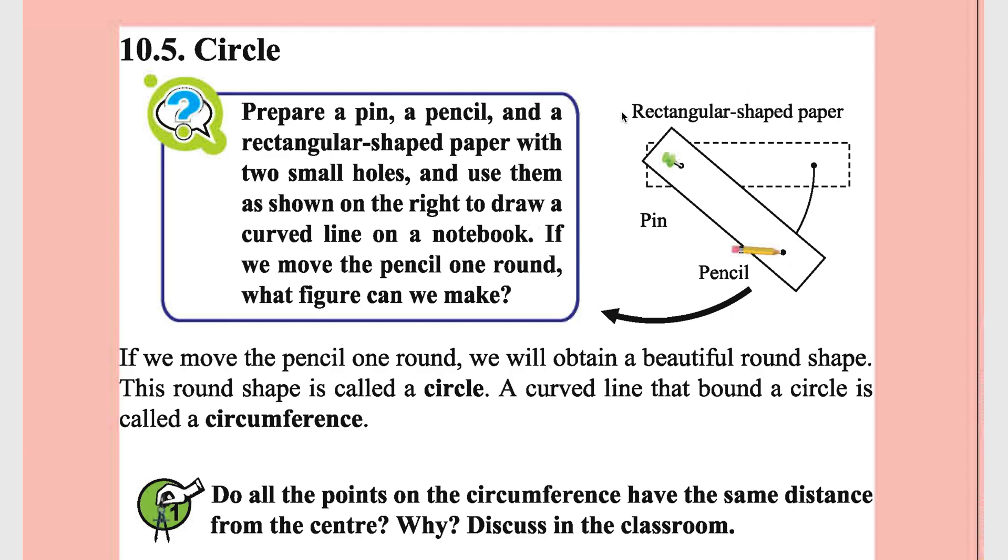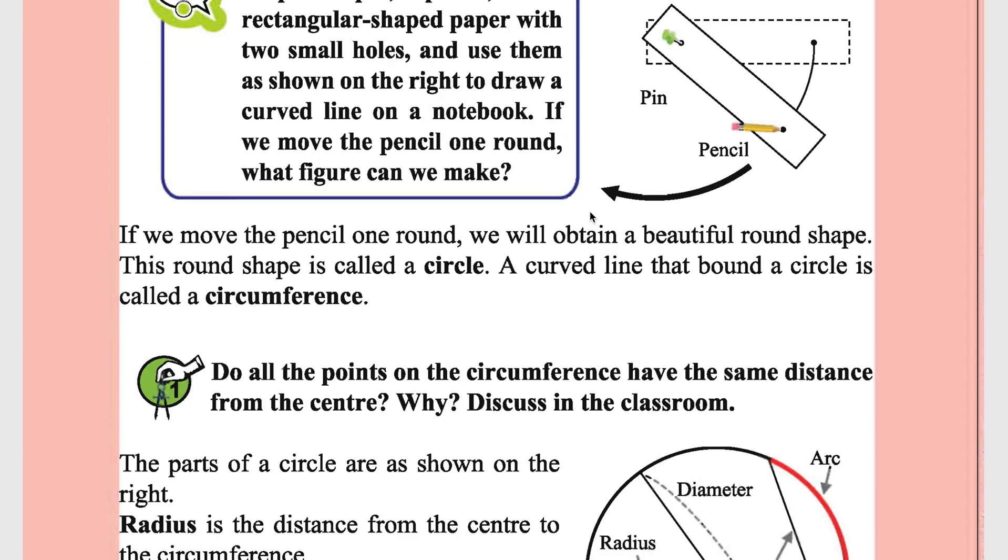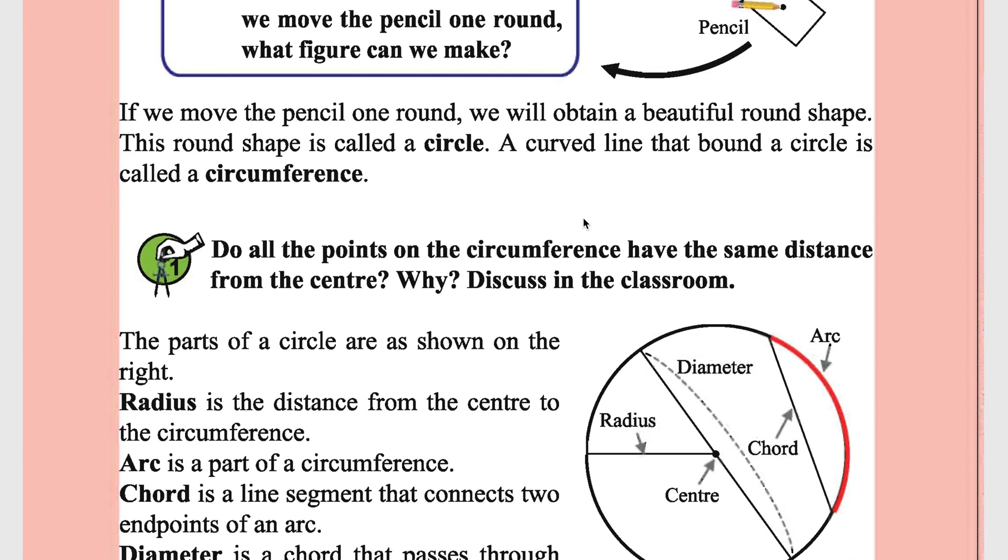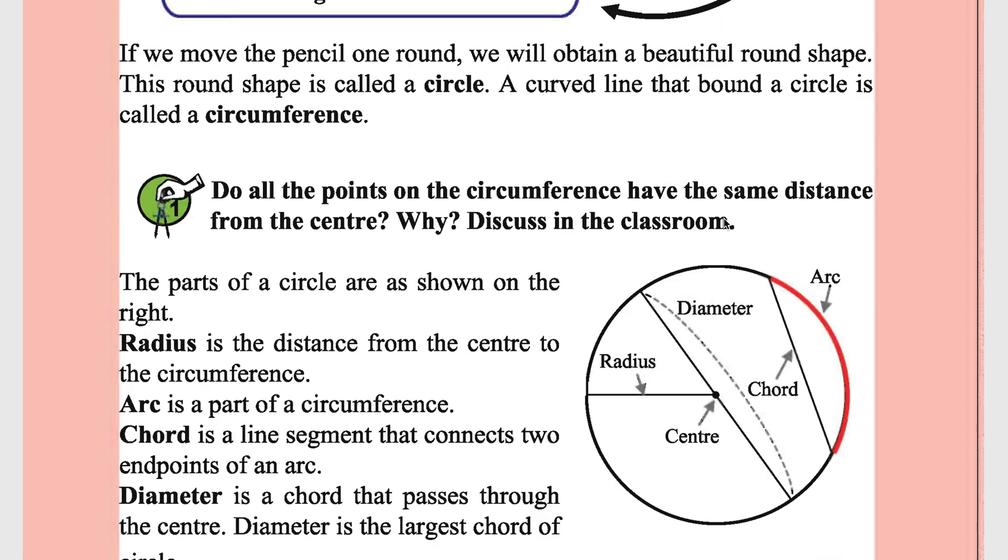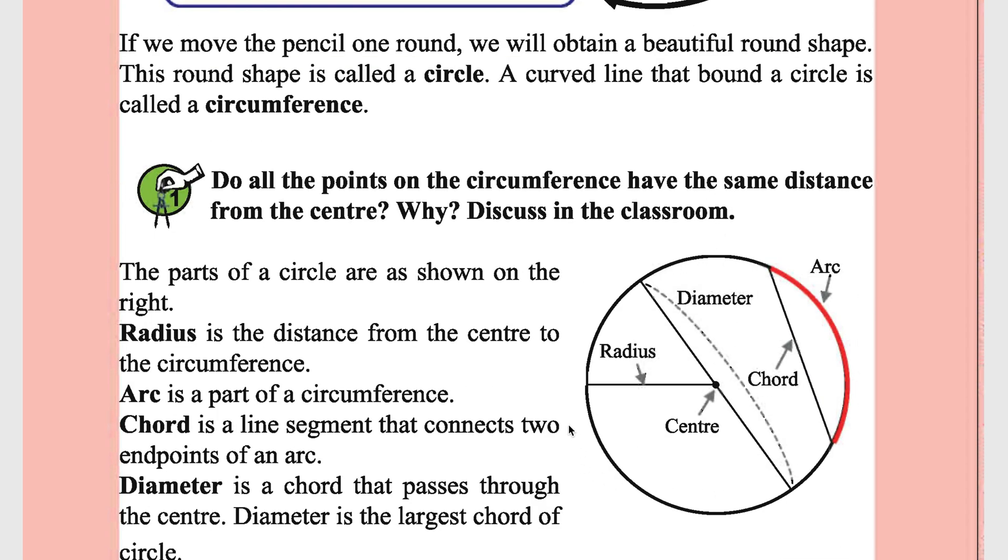If you move one round, it forms a circle. A curved line that forms a circle is called circumference. This total portion is called the circumference.